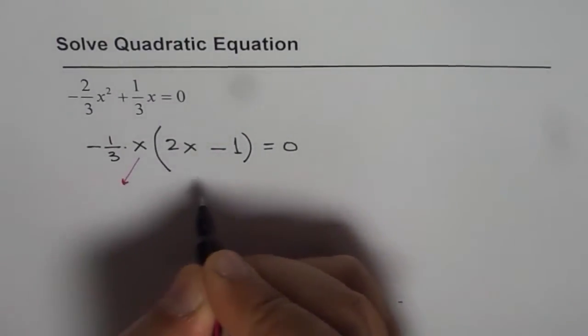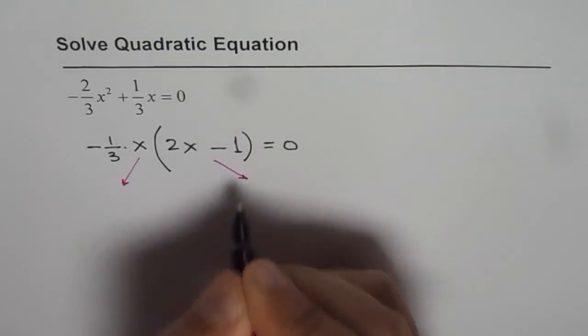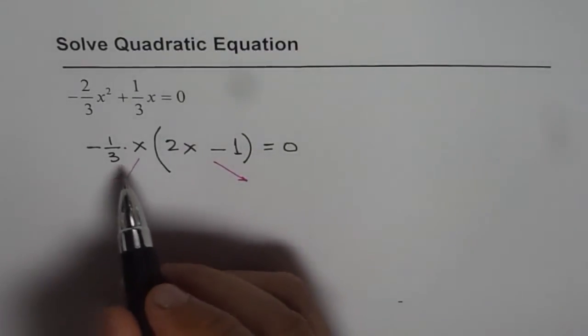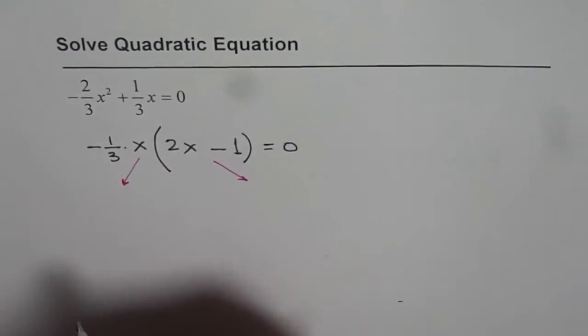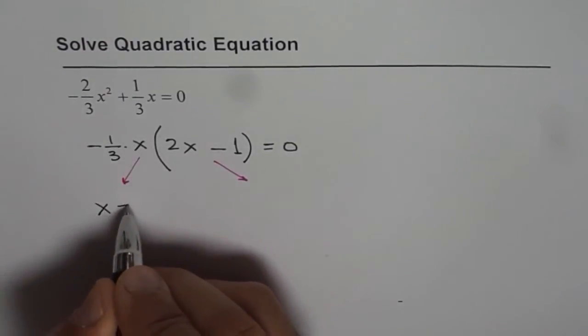One is that x could be 0. The other one is 2x minus 1 equals to 0, right? So the first term is 0 only if x is 0, right? So that gives us a solution that x equals to 0.